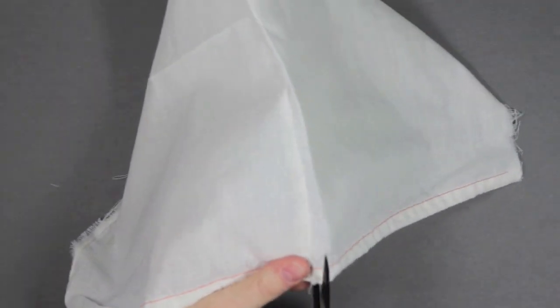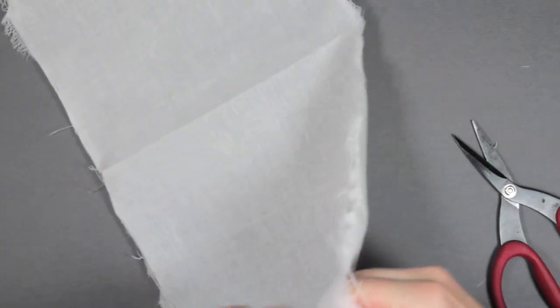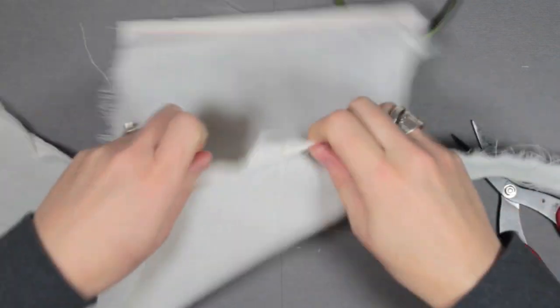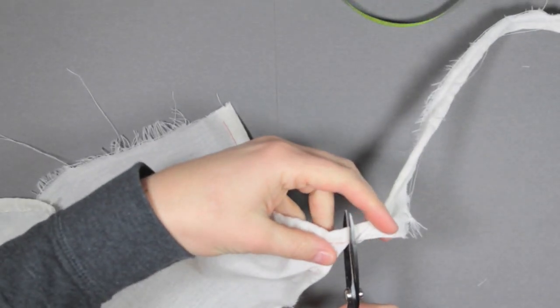Now I'm opening the bag entirely so you have a flat piece of fabric. I'm going to start cutting some strips. I use my scissors to give me a starting point, and after you make that initial snip it goes pretty fast.